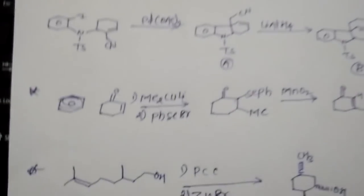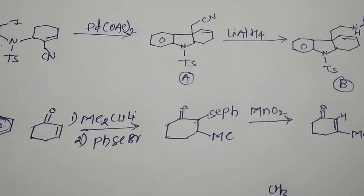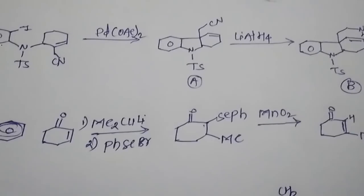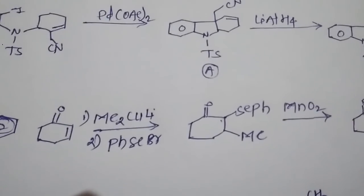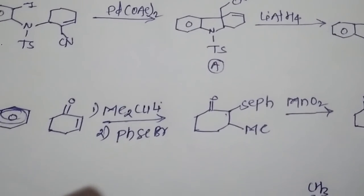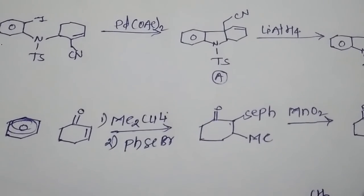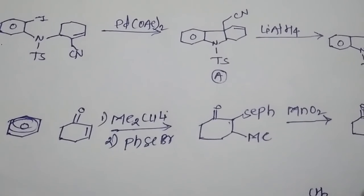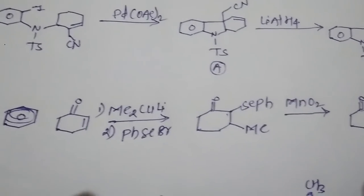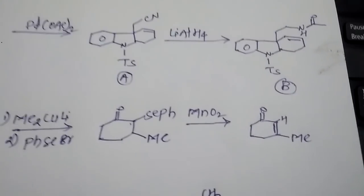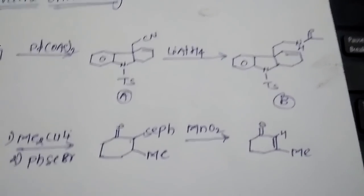We'll move to the second question. You can see here copper reagents always will give Michael addition, and when the enolate comes back, it will be trapped by the electrophile. Here, Ph selenium bromide is the electrophile, so this will be the answer for this one. In presence of oxidizing agent, that selenium will oxidize and then elimination of that selenium to get this product.